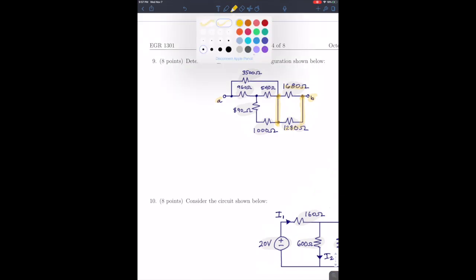So I'm going to call that resistor R1. So R1 is 1680 in parallel with 1280. So you can compute that. We know the formula for that. Next, we notice that 890 and 1000 are in series. So we could call that R2. That would be 890 plus 1000.